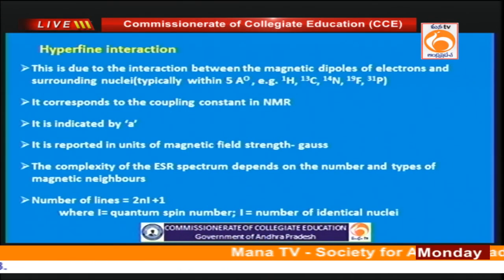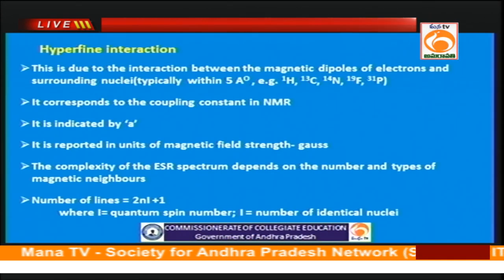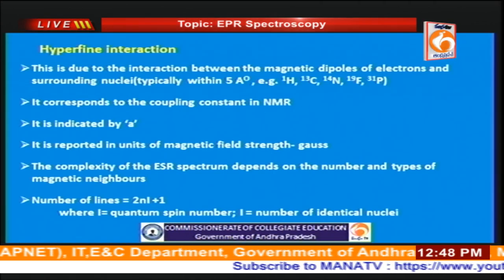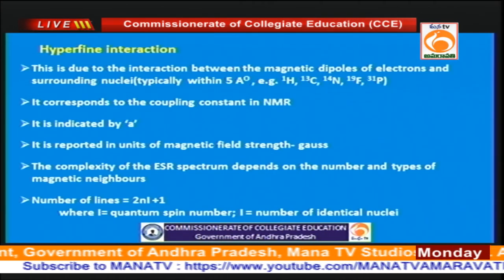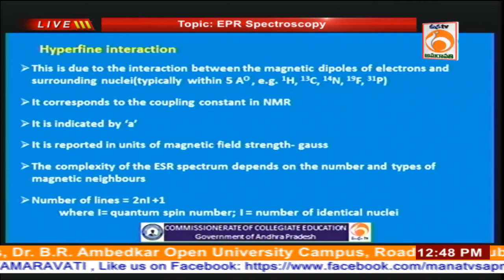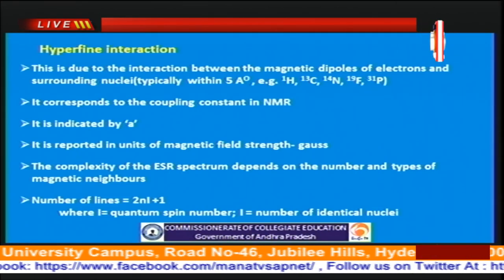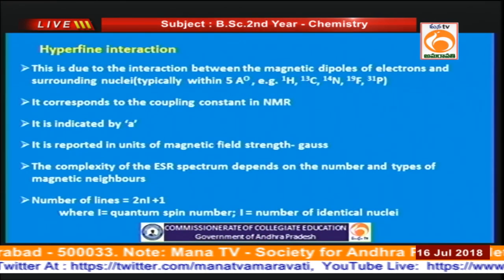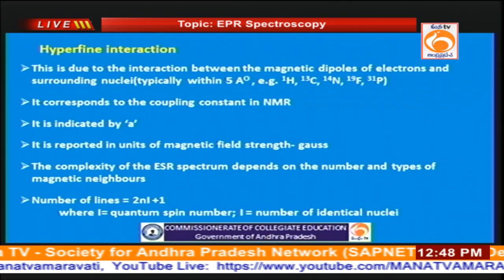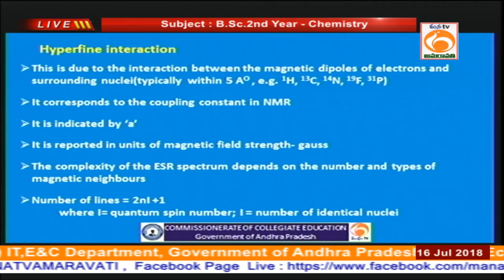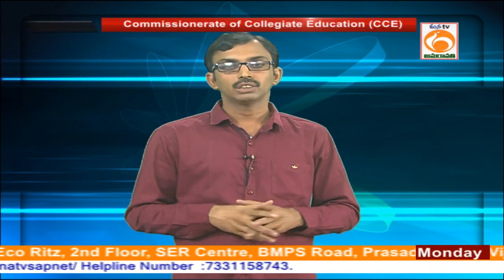Now let us discuss hyperfine interaction, which is analogous to the coupling constant in NMR. In NMR, coupling occurs between two protons with different chemical shift values. In EPR, splitting occurs because of the coupling of the unpaired electron spin with the spins of surrounding protons (generally within a range of 5 Ångström units). Protons, C-13 nuclei, and N-14 nuclei are some of the nuclei that commonly undergo interaction with the electron in the molecule. The hyperfine coupling values are given in units of Gauss. The same formula 2NI + 1 can be used to explain the splitting, where N is the number of surrounding protons and I is the spin quantum number.